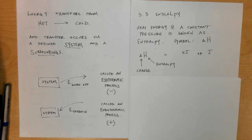The triangle stands for change and H stands for enthalpy or heat at constant pressure. It too is measured in joules or kilojoules because it's an amount of energy.